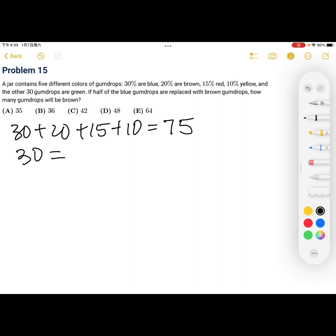So that means x is equal to 120 gumdrops. There are a total of 120 gumdrops. So,